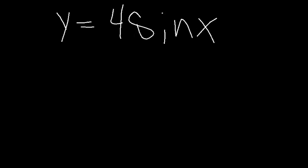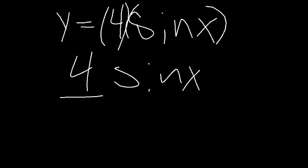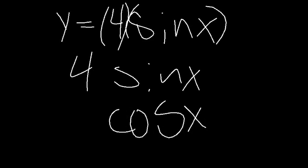So when do we know we're using the product rule? Let's take a look at this equation. We do see two things being multiplied — however, these are not two separate functions. This is just 4 times a function, so it's a non-function times a function. Because this isn't a function times a function, we don't use the product rule. We would just use the basic trig derivative. We know that the derivative of sine x is just cosine, and we leave the constant alone.